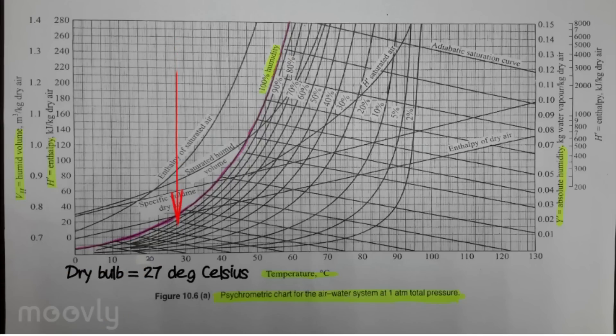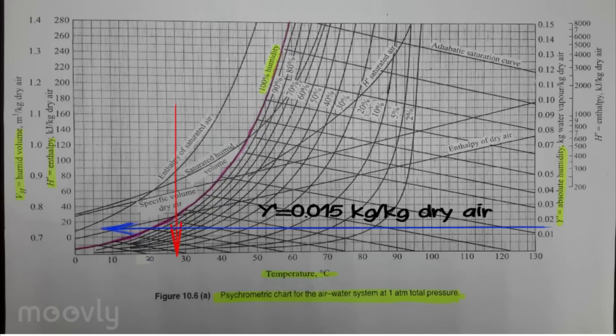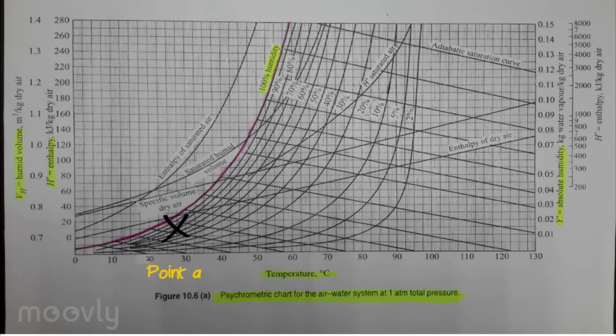Example: given dry bulb temperature is 27 degrees Celsius, and given humidity of 0.015 kg water vapor per kg dry air. We successfully find one point, we name it as point A in the psychometric chart.